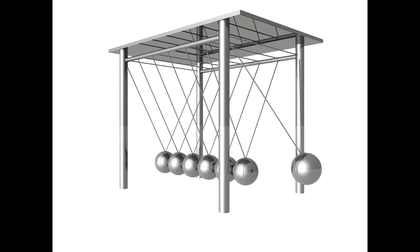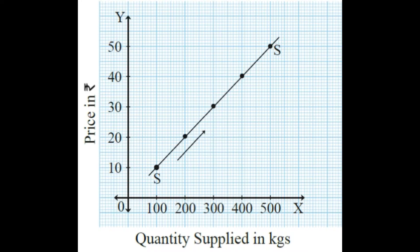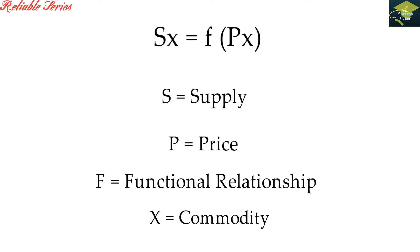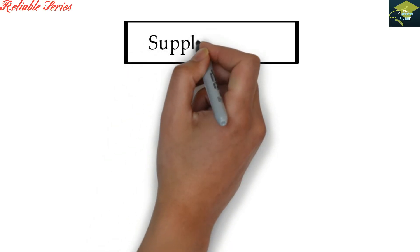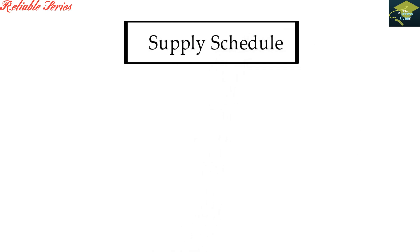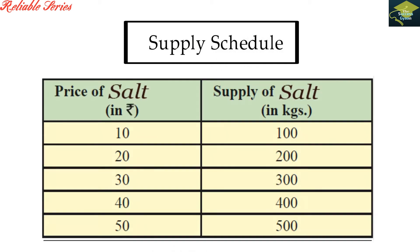Law of supply को हम supply schedule और supply curve की help से समझ सकते हैं. पहले law of supply को supply schedule से समझते हैं. Supply schedule एक tabular representation होता है of price and quantity supplied by the producer. For example, ये एक imaginary supply schedule है।